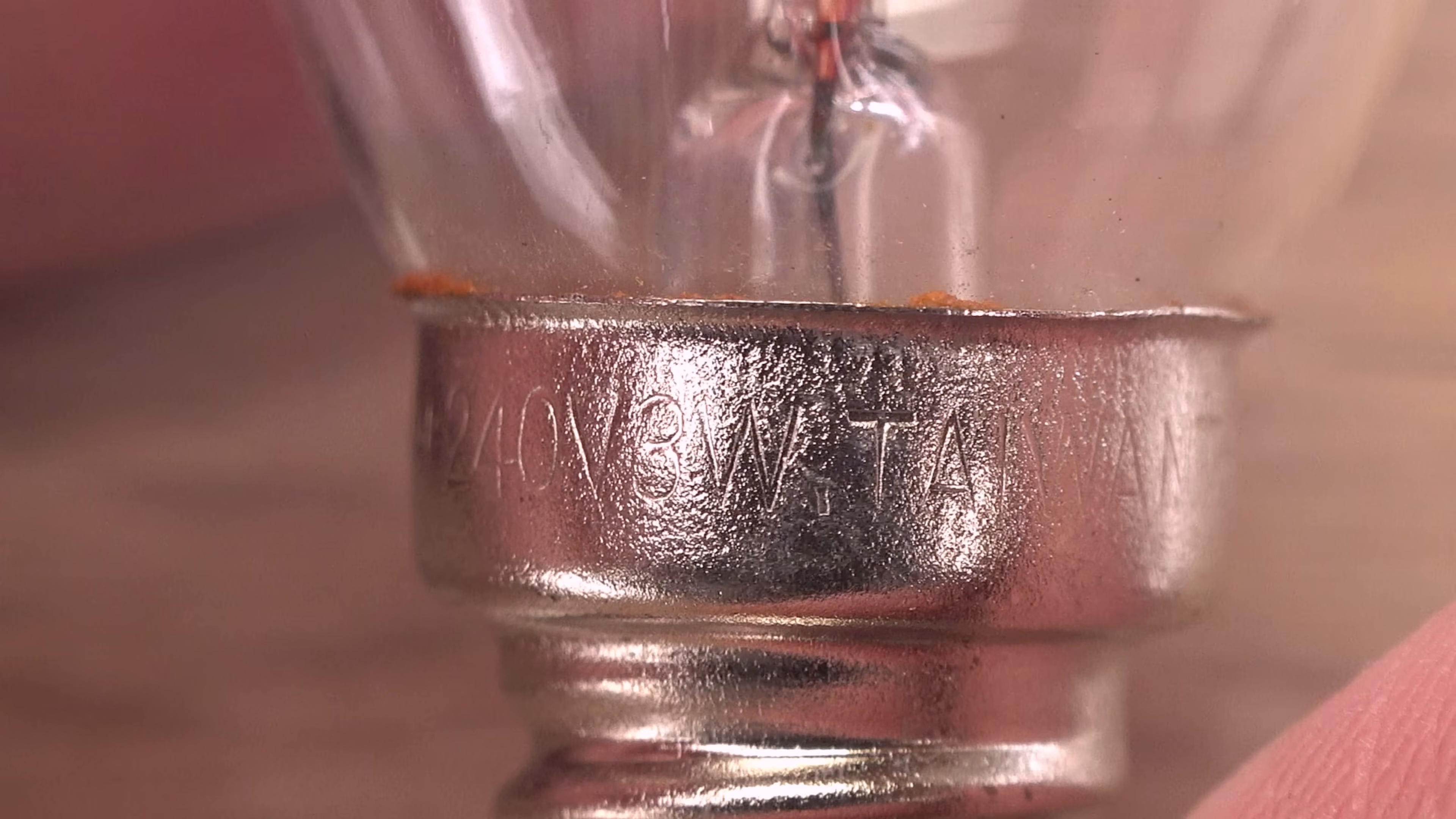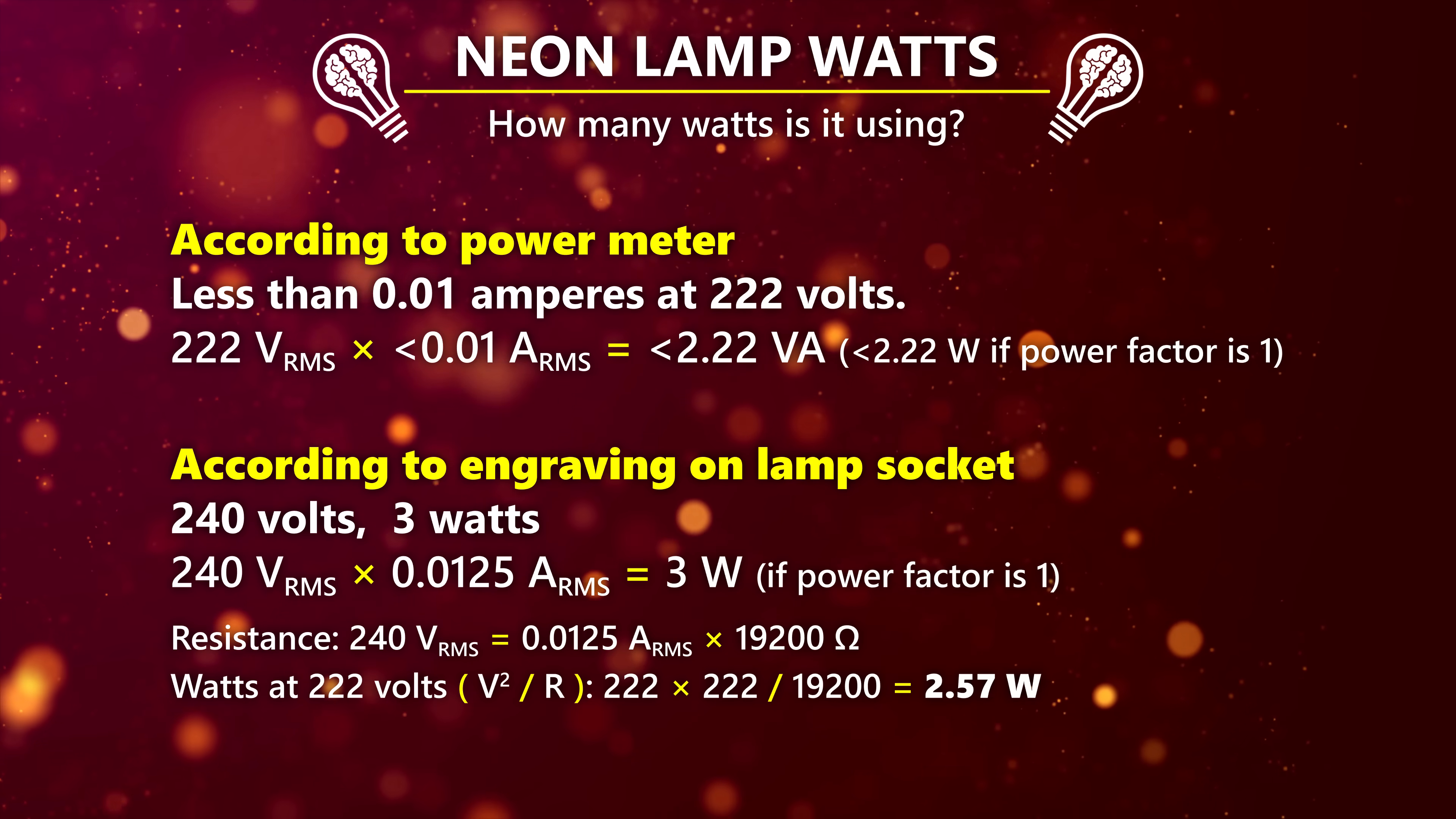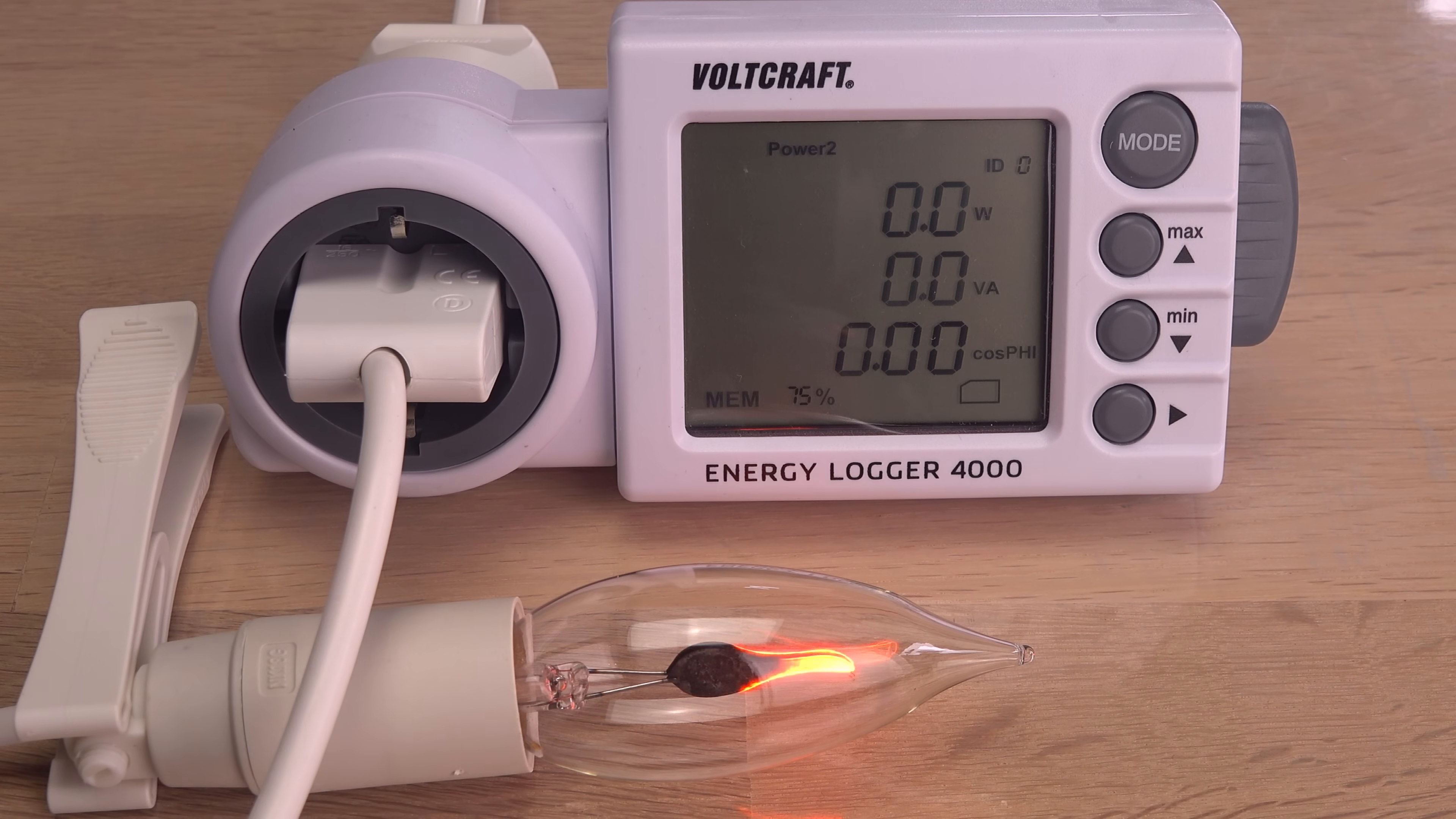Officially it is 3 watts at 240 volts, making it around 2.5 watts at 222 volts, if the resistance is a fixed value over this voltage range. I guess it isn't, or this bulb is somehow faulty, since it is only sipping electricity.